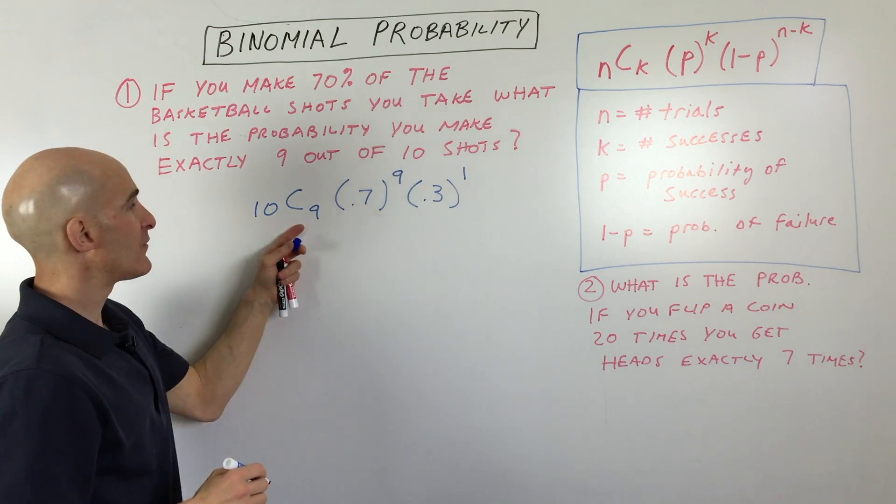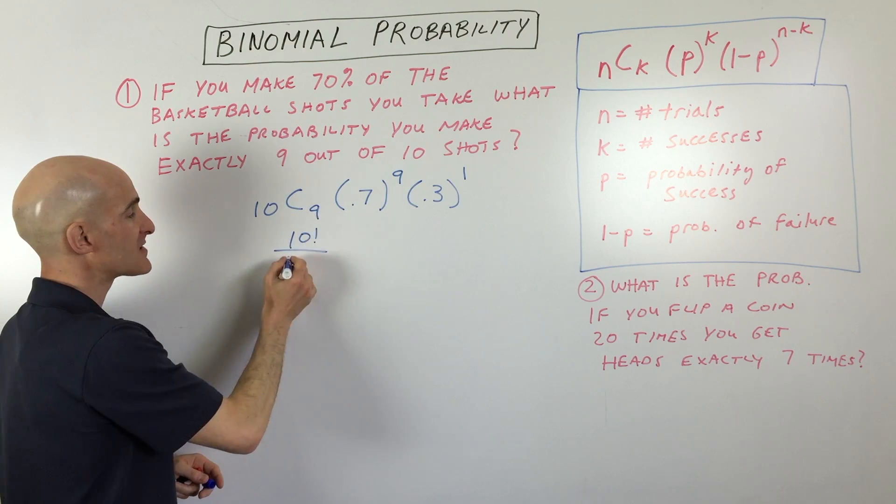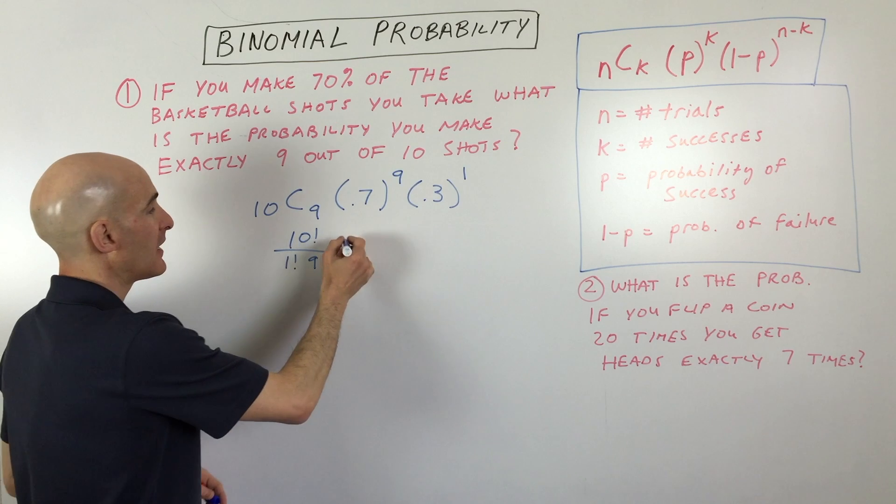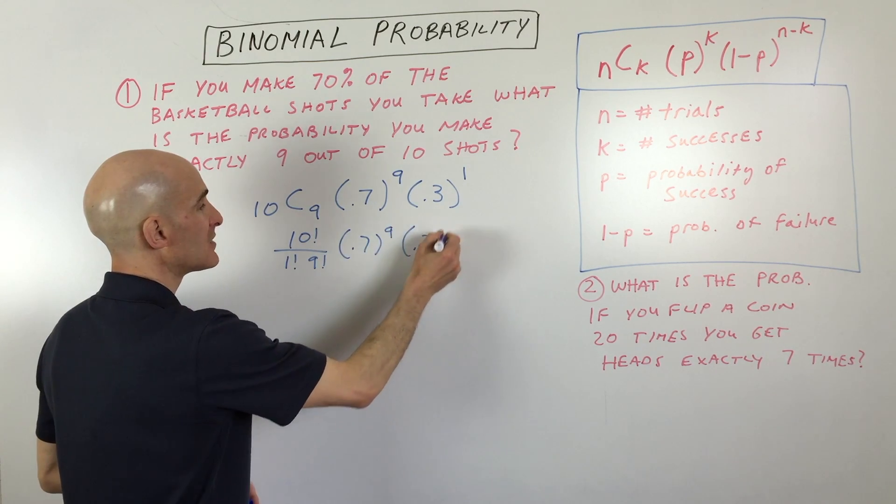So if we simplify this, 10 choose 9 is 10 factorial over 10 minus 9, one factorial, nine factorial. And then we have 0.7 to the ninth, and 0.3 to the first.